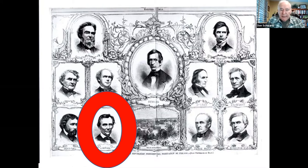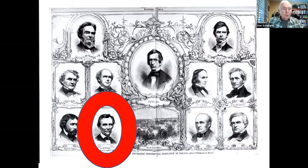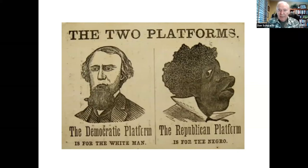It was a bitterly fought campaign with four candidates running. At that time, political campaigns were a source of entertainment — events ran the gamut from rallies to parades to picnics, fireworks, and excursions, and sometimes there were even riots. Southerners depicted Lincoln as a black Republican, a John Brown in sheep's clothing, and claimed his election would signal a slave rebellion. A Democratic flyer contrasted the Democratic platform versus the Republican platform, which they said was 'for the Negro.'